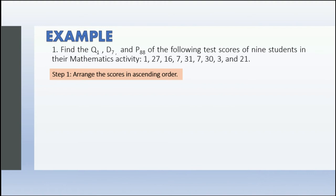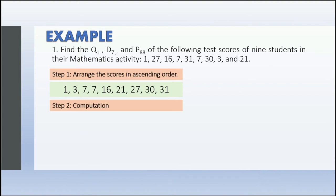Arranged in ascending order, we have: 1, 3, 7, 7, 7, 16, 21, 27, 30, and 31. Then for step 2, we solve or calculate the measures of position. Let's solve for quartile 1 first.